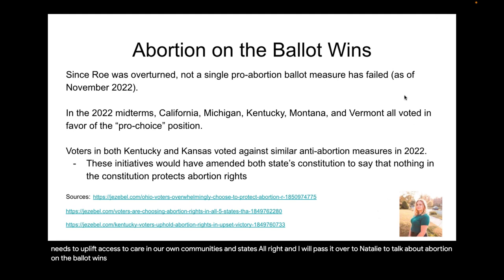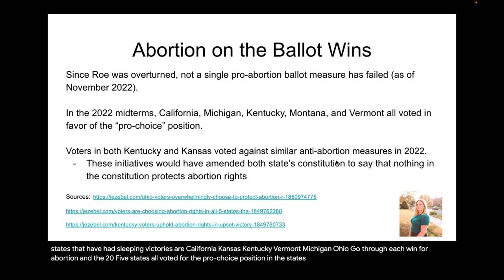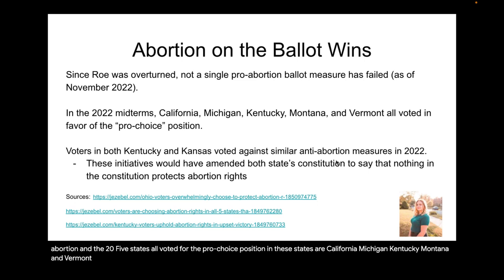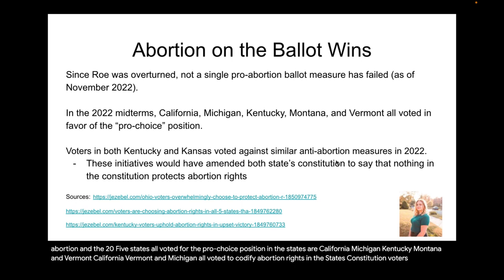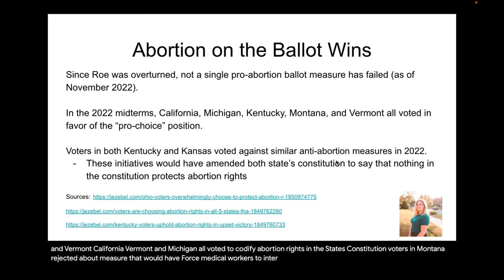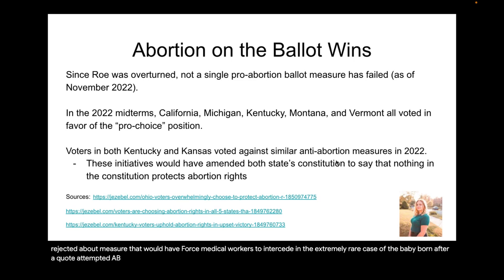Thank you for joining what will be a great discussion. I'm going to dive into abortion on the ballot since Roe v. Wade was overturned in June of 2022. As of November 2022, according to Jezebel, not a single pro-abortion or pro-choice ballot measure or initiative has failed. The seven states that have had sweeping victories for abortion rights are California, Kansas, Kentucky, Vermont, Michigan, Ohio, and Montana. Abortion is popular and it wins.